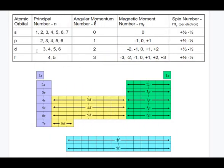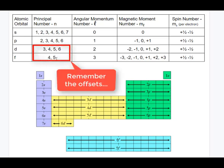Let's connect the list of principal quantum numbers to the periodic table with these regions. The principal quantum numbers for the S are one through seven. For the P, two through six. For the D, three through six. And for the F, four through five.